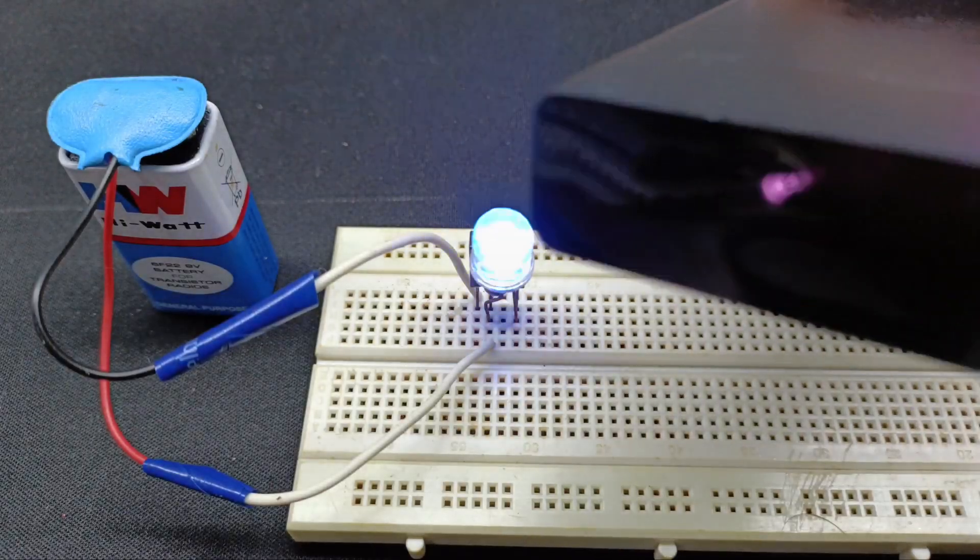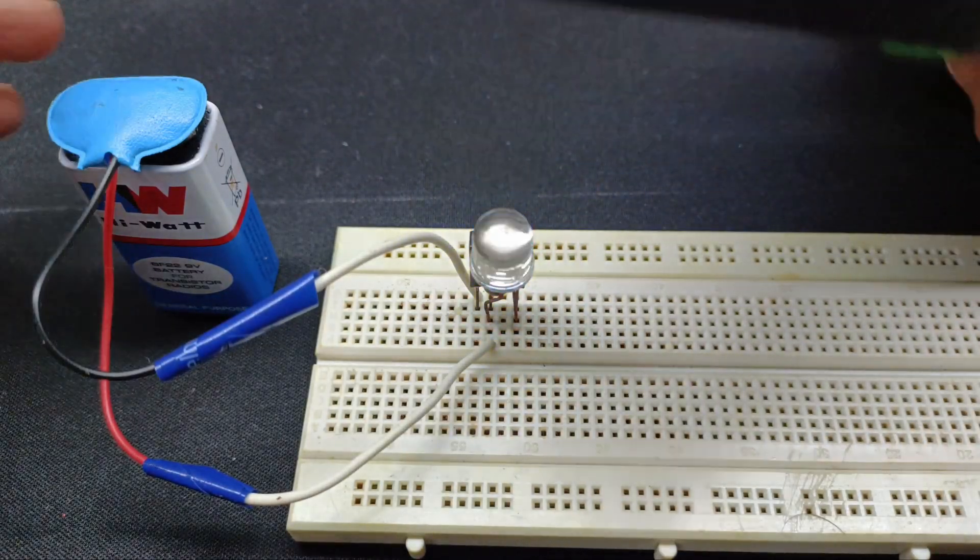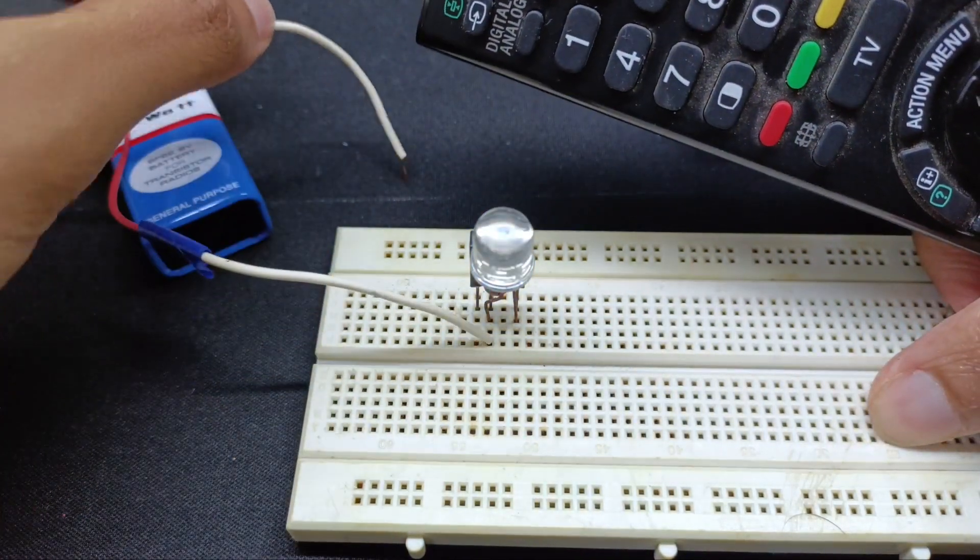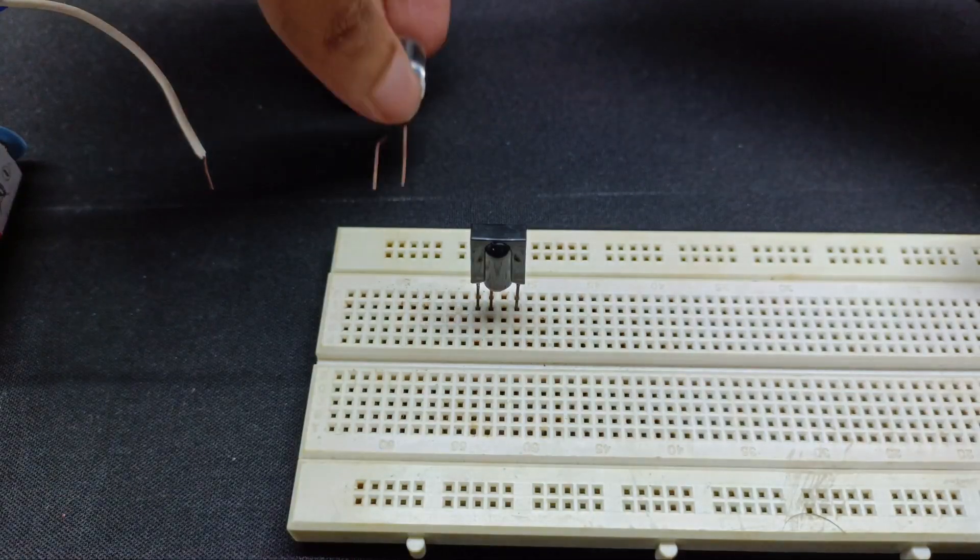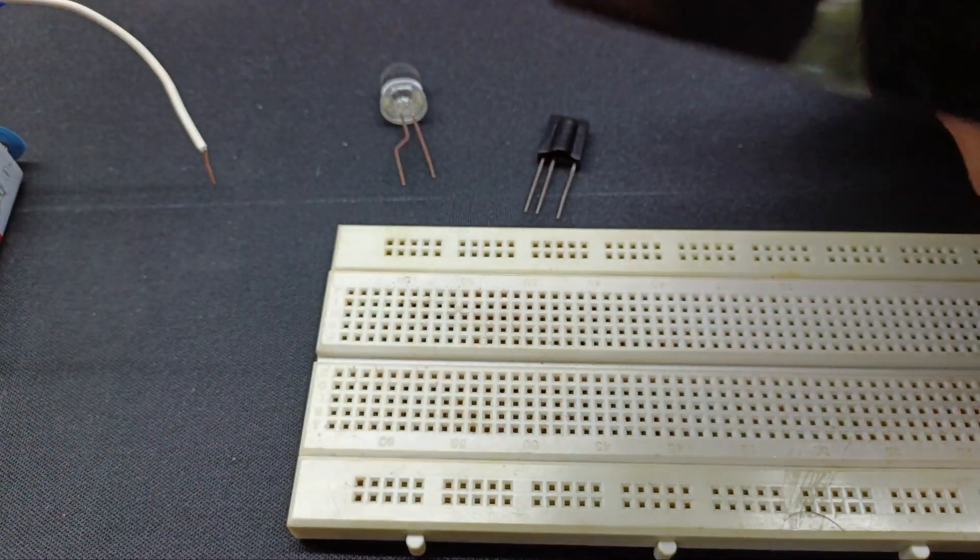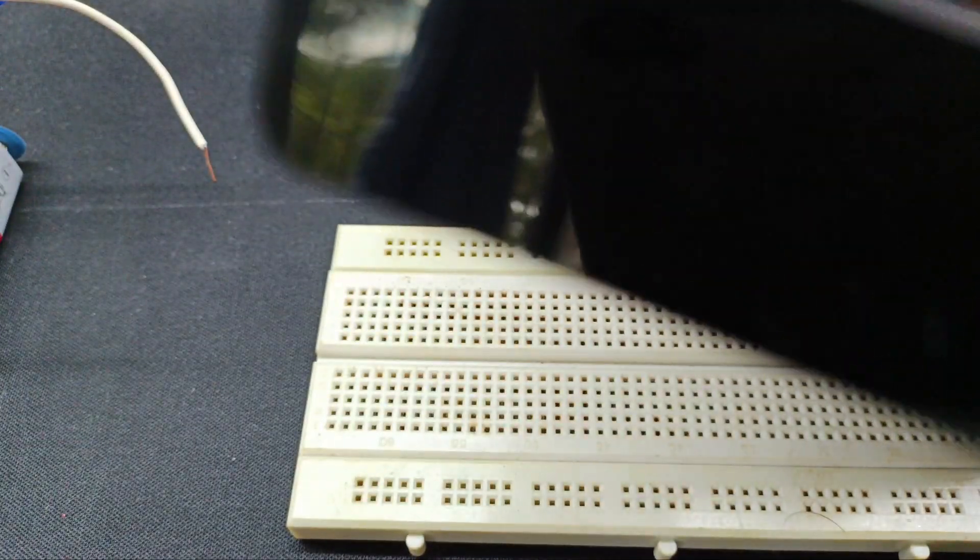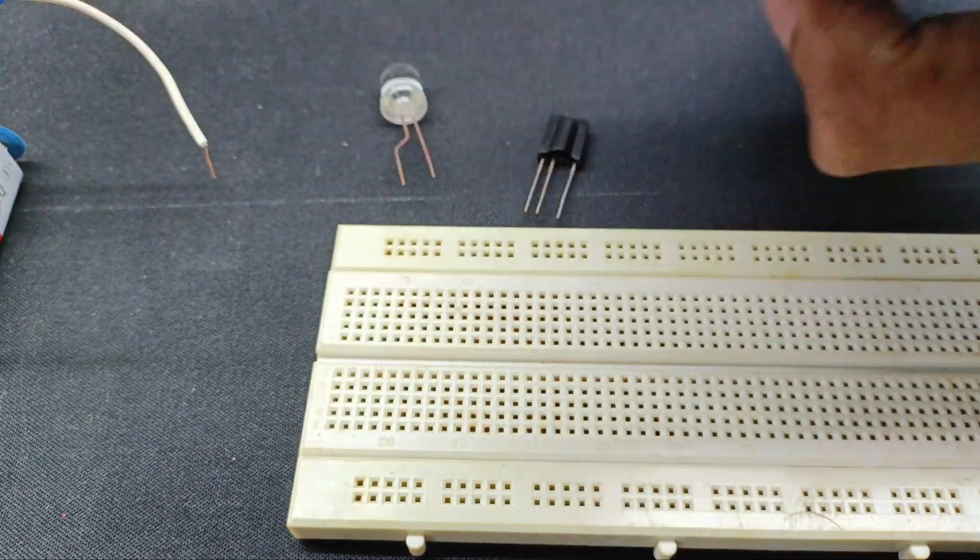I know it's really easy to check if the IR emitter on your remote is working or not. You can simply point it at the camera and press the button to check. But if you want a really cool and simple electronics project, watch this video because you can make this circuit using just a few electronic components.